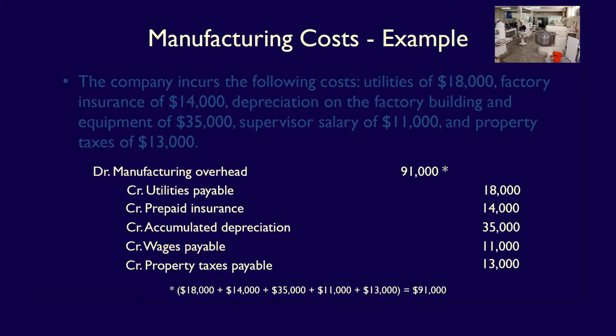We debit manufacturing overhead for the total of $91,000, then credit: utility payables $18,000, prepaid insurance $14,000, accumulated depreciation $35,000, wages payable $11,000, and property taxes payable $13,000. Note that expense accounts are not used here. Students often charge these to expense accounts, but these are indirect inventoriable product costs which must eventually be reflected in finished goods inventory on the balance sheet. That's why they're placed in the manufacturing overhead holding account until used in production.